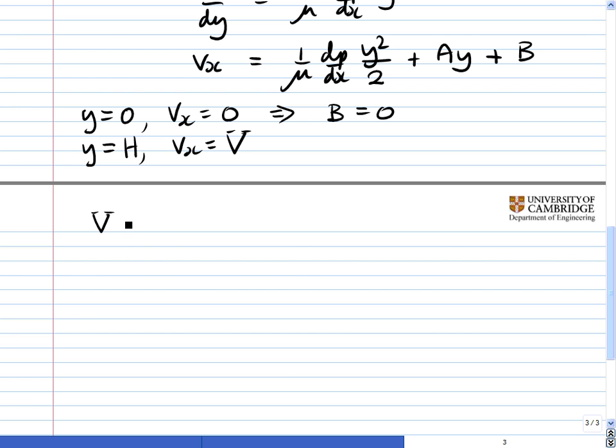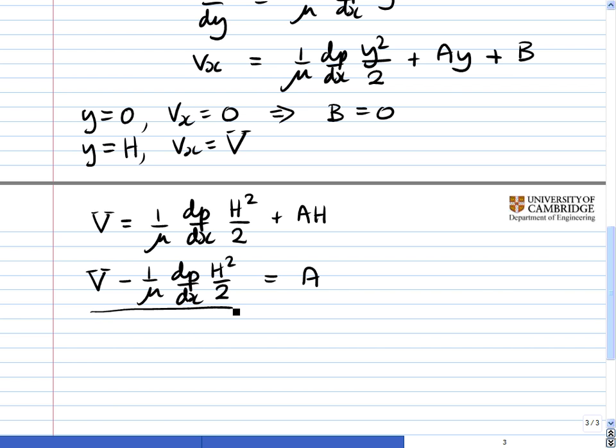Substituting in, we're going to get big V equals 1/μ dp/dx H²/2 plus AH plus B, but we know that B equals zero. Now we need to solve for A, so we'll take this term over to the left-hand side. We get V - 1/μ dp/dx H²/2 equals AH. Taking the H onto the other side gives us an expression for A.